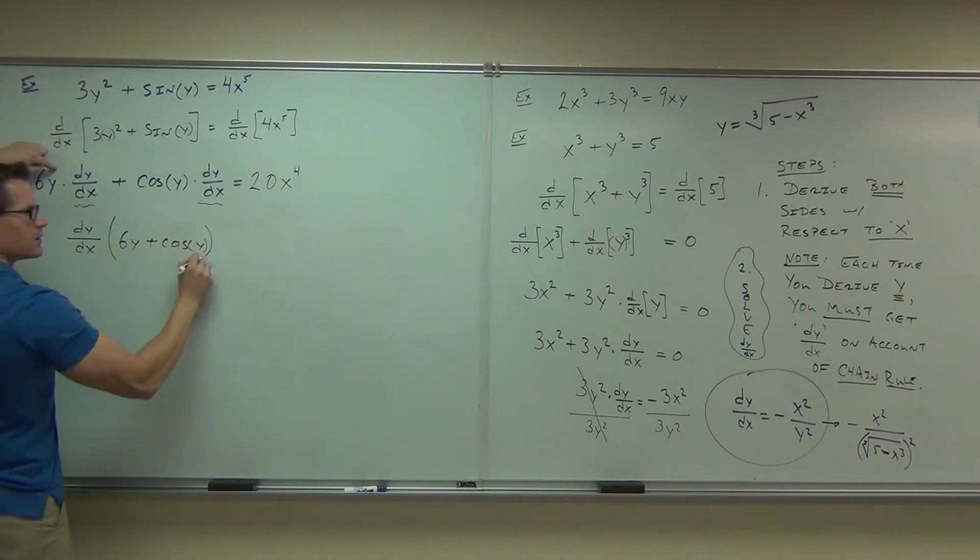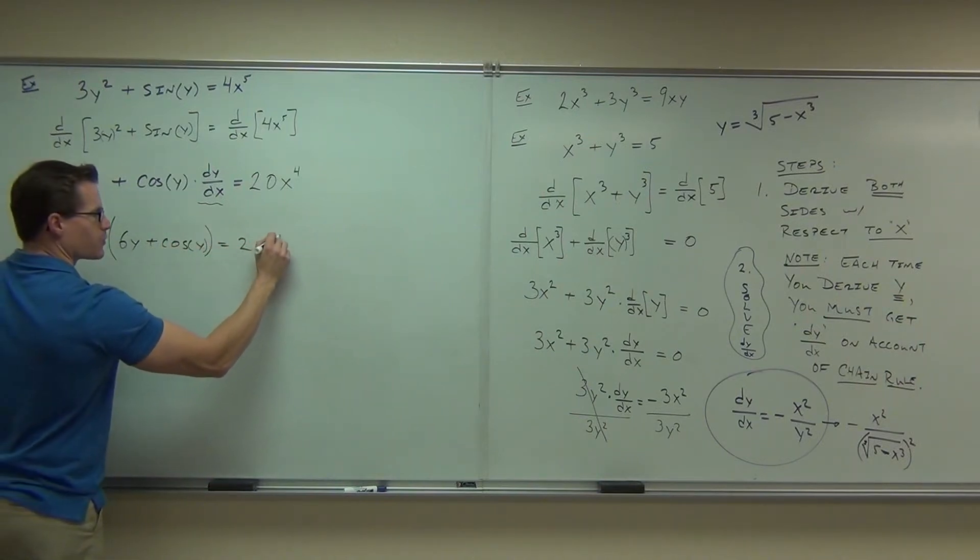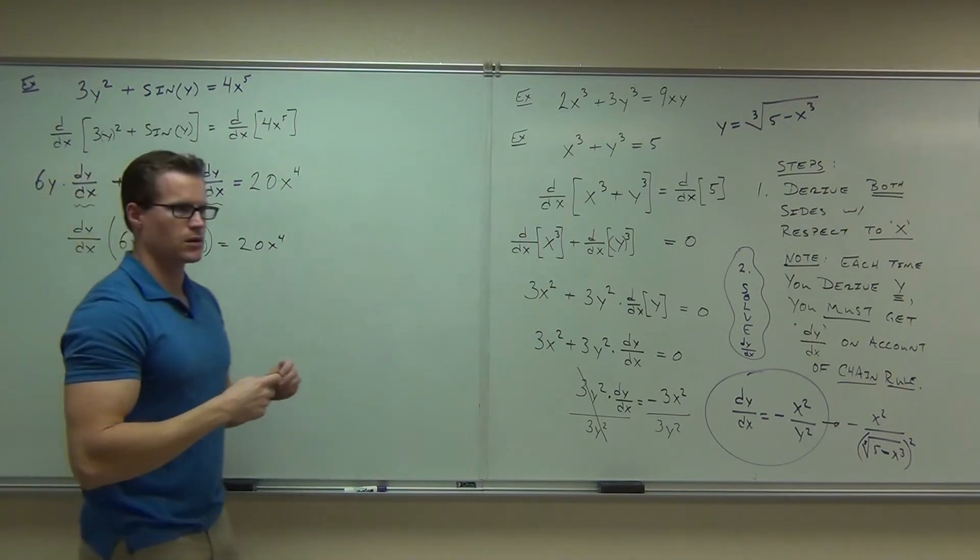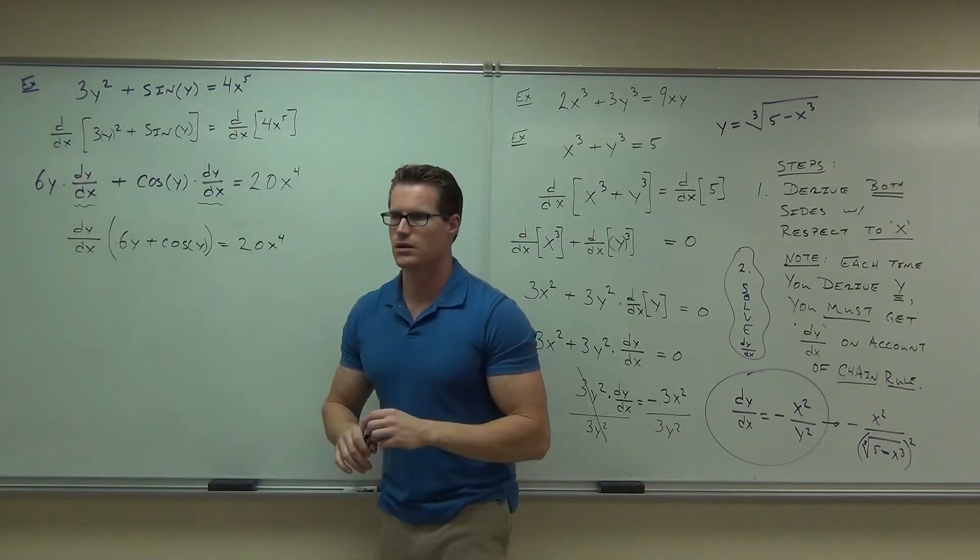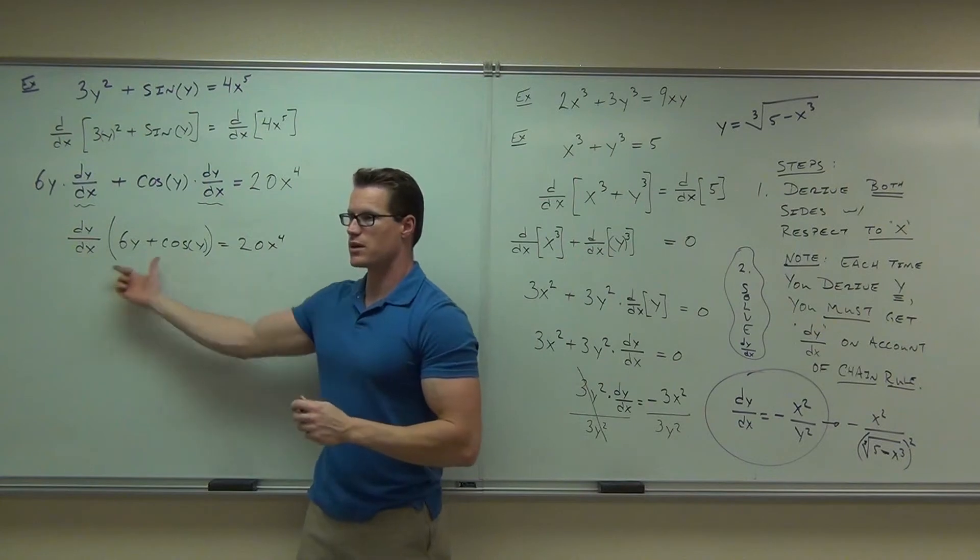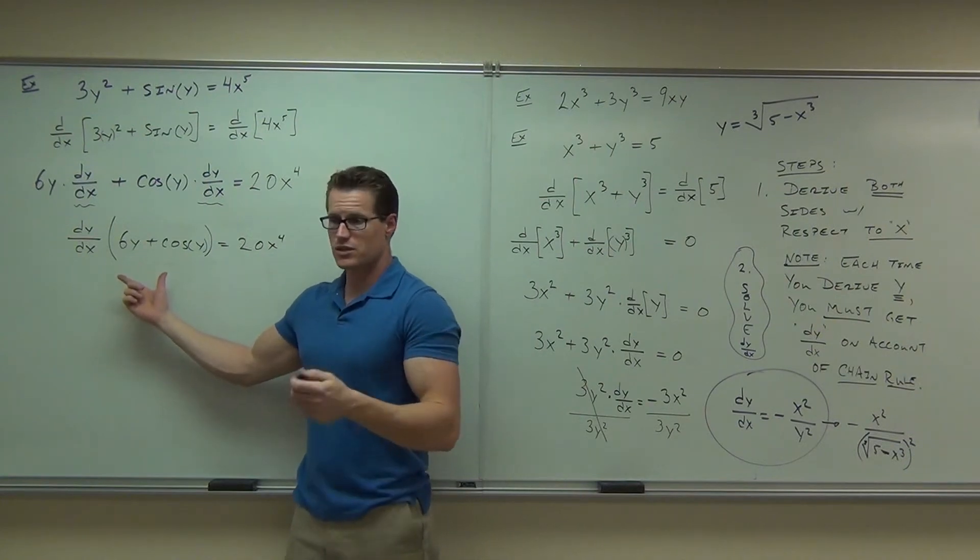Cosine y equals 20x² to the 4th. So far, so good. Let's get rid of this nasty piece of junk. What are we going to do with that? Yeah, just divide it.